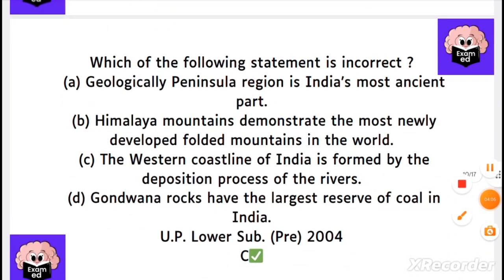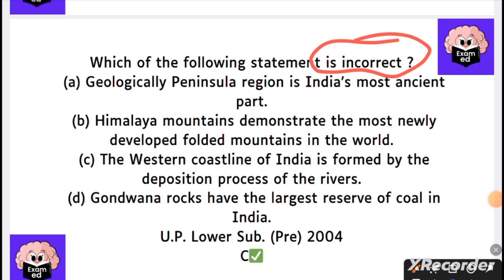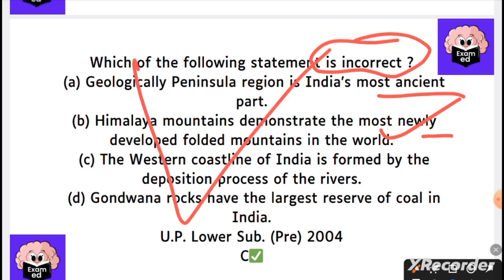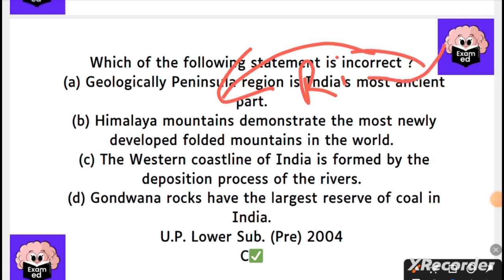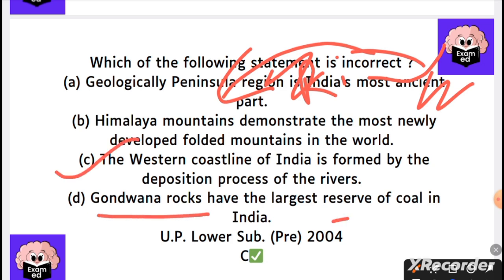Next, identify the incorrect statement. The peninsular region of India is the most ancient part — correct. The Himalayan mountain is the most newly developed folded mountain — correct. The western coastline of India is made from deposition — incorrect, because deposition occurred on the eastern side, not the western. So we eliminate C. The Gondwana rocks have the highest coal reserve.